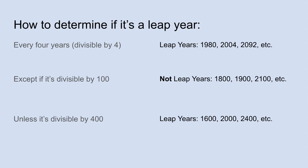So, here's how to determine if it's a leap year. Basically, it's every four years. If the year is divisible by four — like 1980 or 2004 — then it's a leap year. And the extra day is added at the end of February, so February 29th only comes around once every four years.